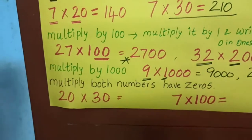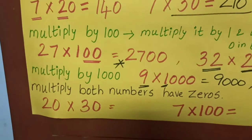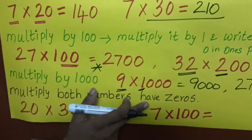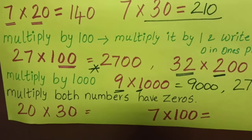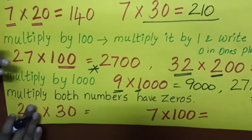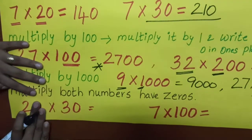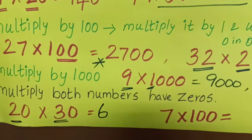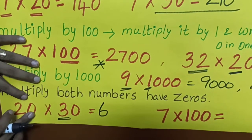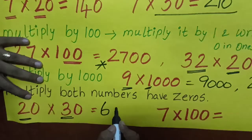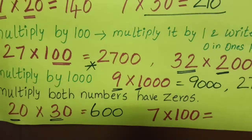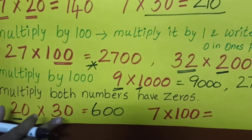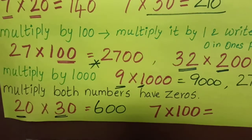Now, in the sum both numbers are having zeros. What is the procedure? No one should consider the zero first — first consider the number. 2 threes are 6. Then count how many zeros total: 1, 2 — two zeros. So 2 zeros go in the answer. Multiply with the number, 2 threes are 6, then add 2 zeros. So 2 zeros come in the answer.